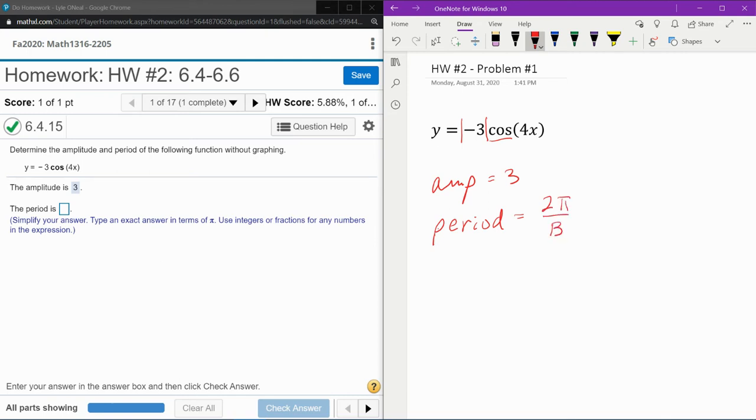Where b is the coefficient of x, and that does need to be positive. So our period is going to be 2π over 4, and two-fourths will reduce to a half. And you do need to reduce that to lowest terms.